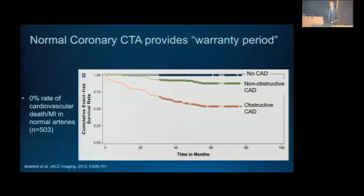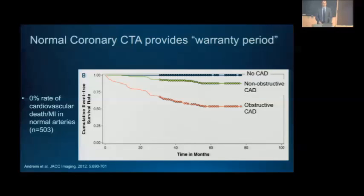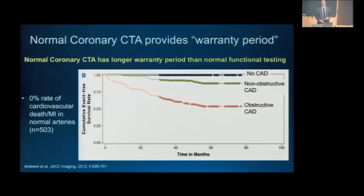A completely normal CTA provides strong reassurance with an excellent prognosis. Among 1,200 patients who underwent coronary CTA, the 500 with completely normal arteries followed up to four to six years had zero events — no cardiac death or MI — compared to those with non-obstructive or obstructive disease who had higher event rates. This gives us the concept of a 'warranty period' from a completely normal coronary CTA, which appears to be a longer and more robust warranty than that provided by functional testing.